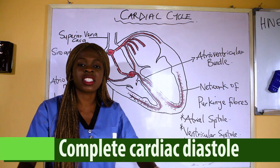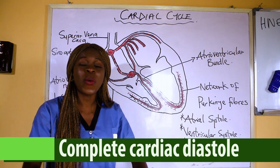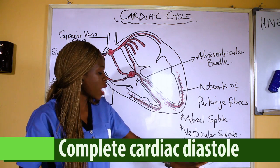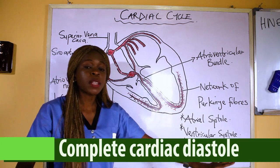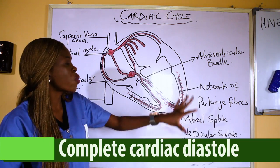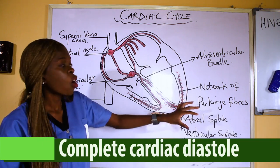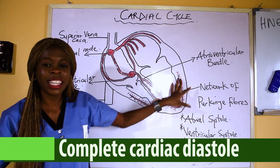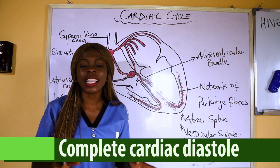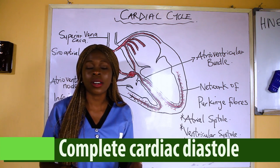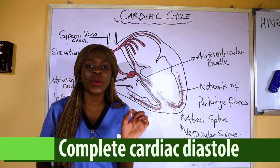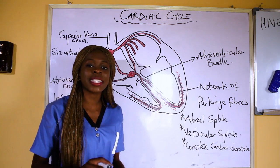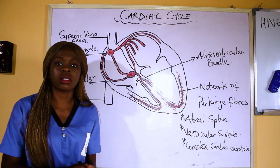The last component is complete cardiac diastole. Whenever you hear diastole, think of relaxation — the resting phase. Complete cardiac diastole refers to the relaxation of both the atrium and the ventricle, and this takes 0.4 seconds, making the total cardiac cycle 0.8 seconds.